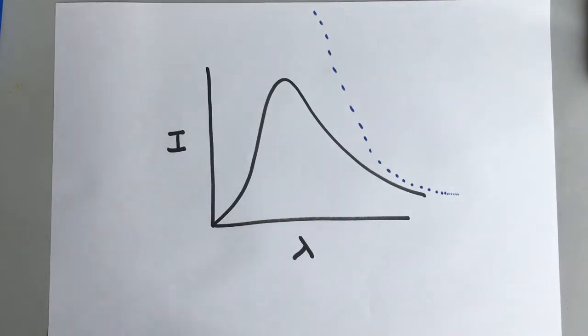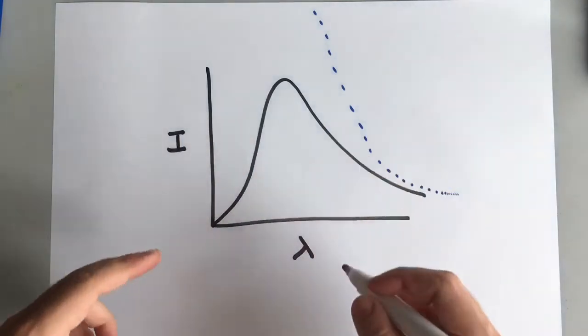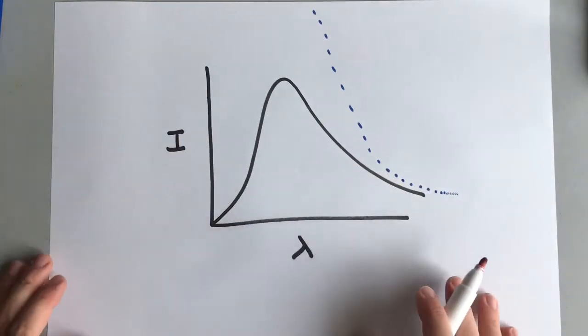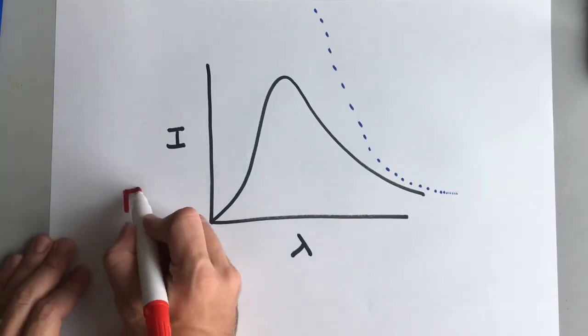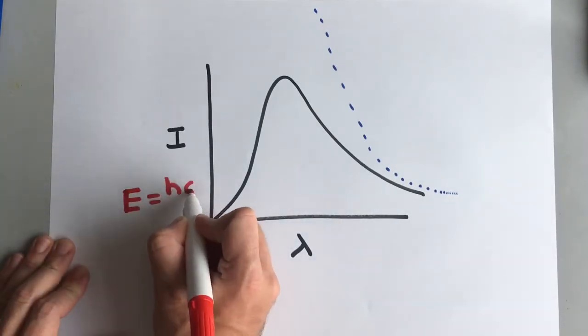Now it turns out that the blackbody curve can only be explained using quantum physics. It can only be explained if this energy is being emitted not as a continuous wave but as a stream of photons with energy hc over lambda.